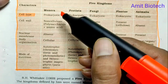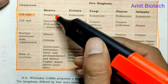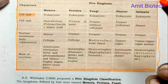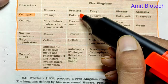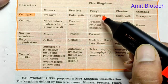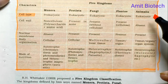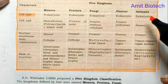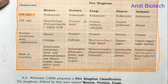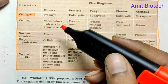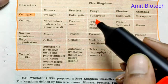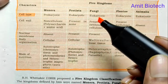Kingdom Monera consists of prokaryotes — organisms that are single-celled and lack a true nucleus. Kingdom Protista and Fungi are eukaryotic, and Plantae and Animalia are also eukaryotic. The key distinction here is between prokaryotes, which lack a nuclear envelope, and eukaryotes, which have a true nucleus.